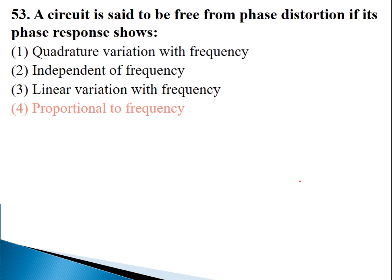The next question asks: for a circuit to be phase distortion free, how should the phase response behave? The options are quadrature variation, independent of frequency, linear variation, or proportional to frequency. For phase distortion-free operation, the phase shift should be proportional to frequency. If the phase shift is proportional to frequency, the circuit will be phase distortion free.